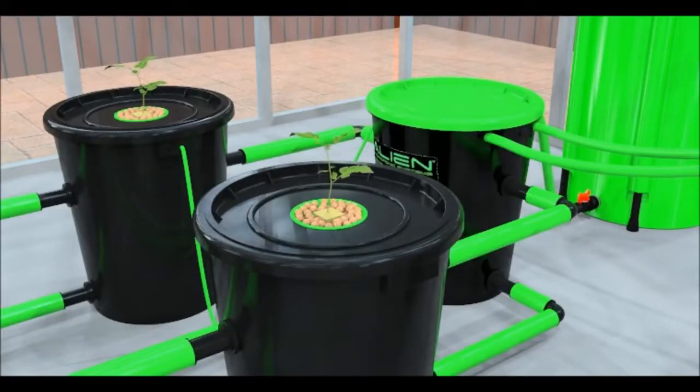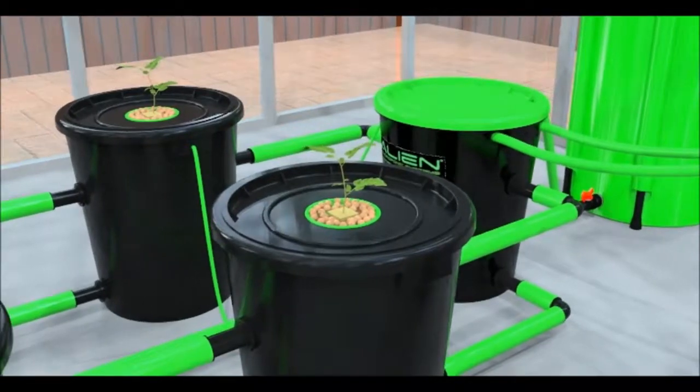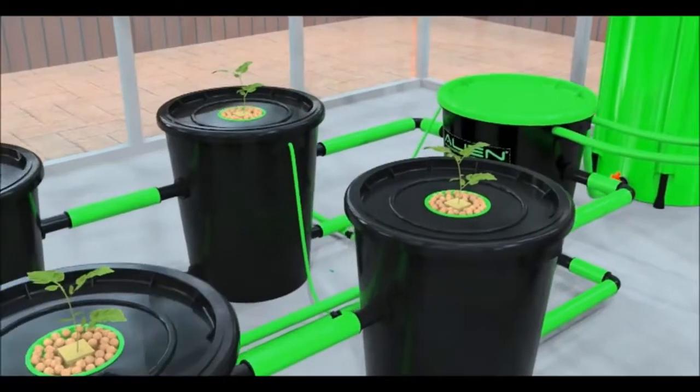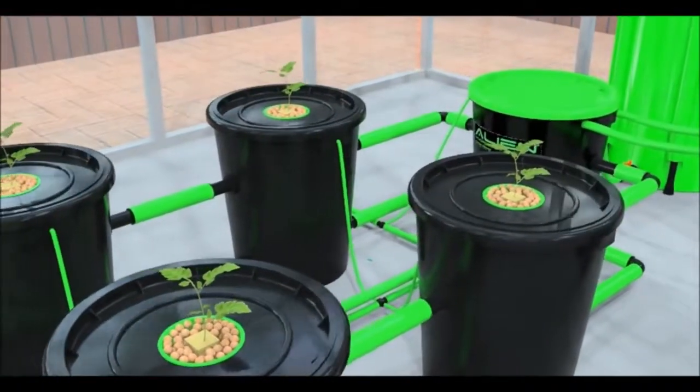If you are transplanting very small cuttings or seeds using 1-inch cubes, you must fill the system so the water touches the net pot. This will keep the 1-inch cubes from drying out for the first few days.